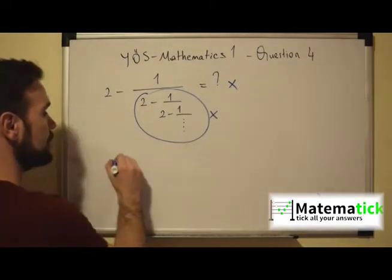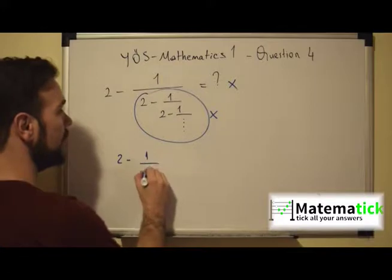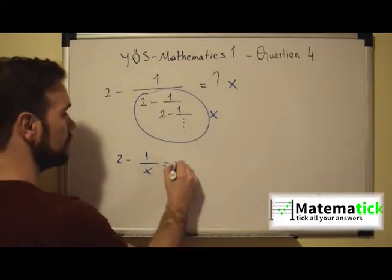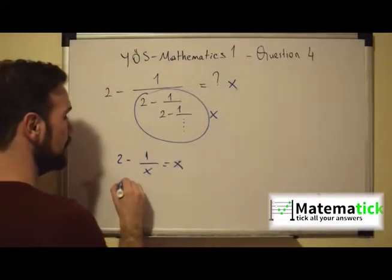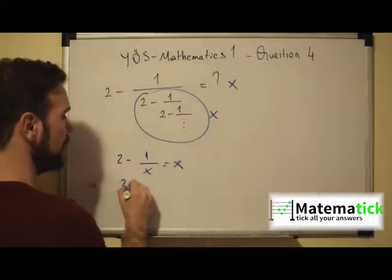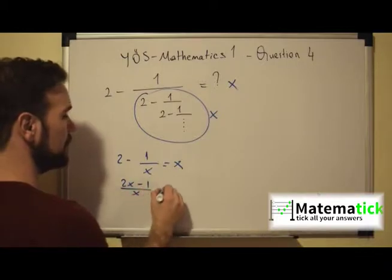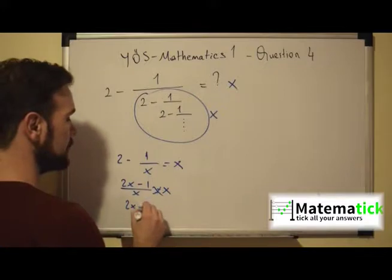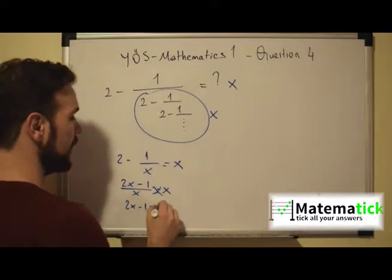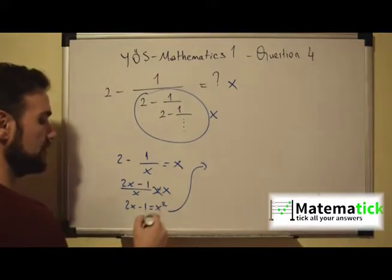So what do we have? 2 minus 1 over X, which is equal to X. We find the common denominator, which is X, giving us (2X minus 1) over X equals X. We cross multiply, and we get 2X minus 1 equals X squared.